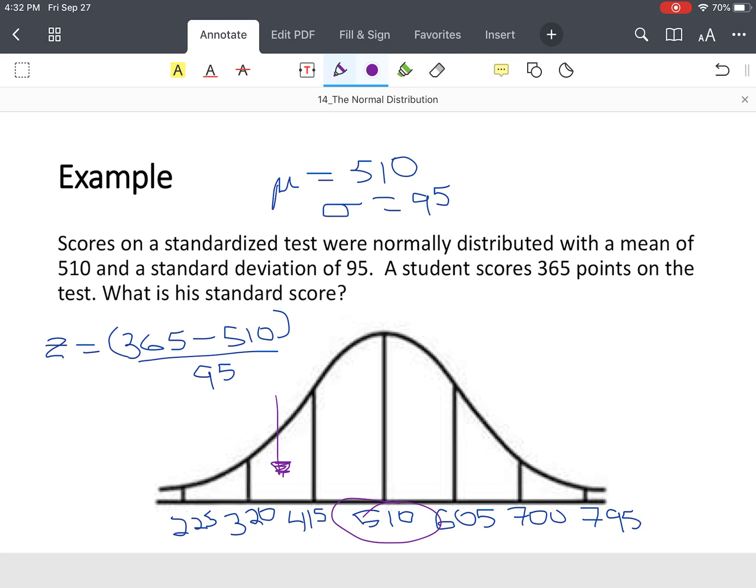So we take 365 minus 510, divide it by 95, and we get a z-score of negative 1.53, going two decimal places. That simply tells us that the score of 365 is 1.53 standard deviations below the mean. So real simple formula. You can draw your curve, and that'll help you interpret the value of your z-score or standard score.